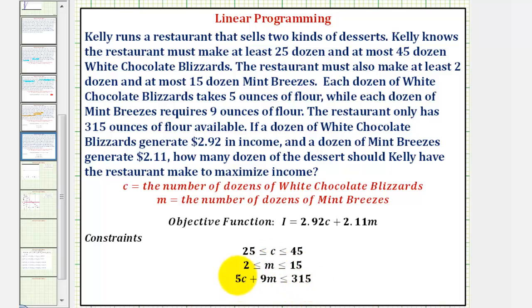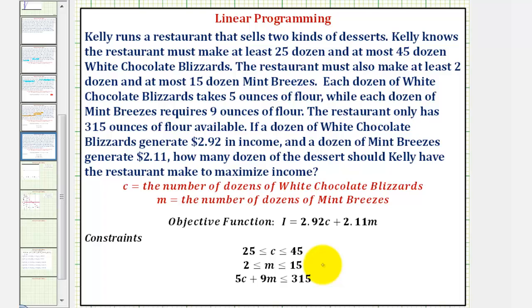Notice 5C represents the amount of flour used on the dozens of white chocolate blizzards, and 9M represents the amount of flour used on the dozens of mint breezes. And this total must be less than or equal to 315. So now for our next step, we want to graph the solution to our constraints, which will give us the feasible region.